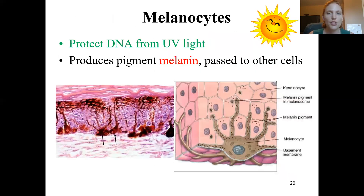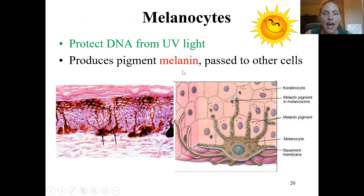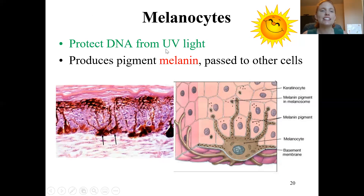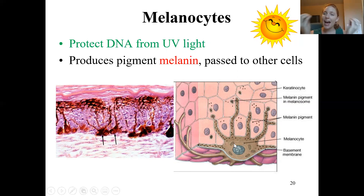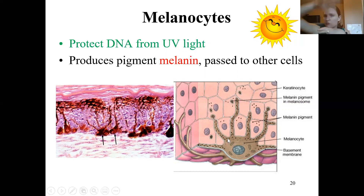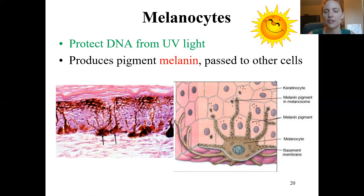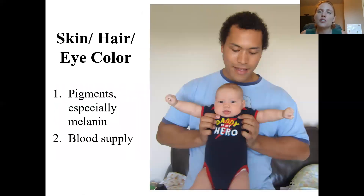Moving on to the melanocytes — they're called that because they produce a pigment called melanin. Melanin protects the cells from UV light, which is very damaging and can damage DNA, leading to things like cancer. The melanocytes are specialized cells that produce melanin and then pass it off to the surrounding cells. Dark colors act like a little umbrella to protect the cells, reflecting the light rather than damaging the DNA.